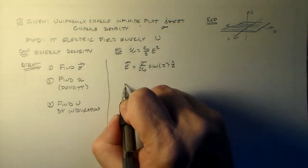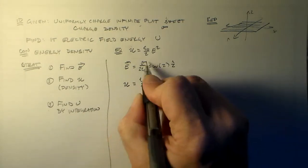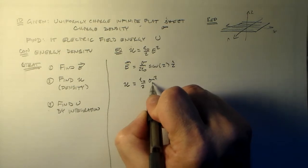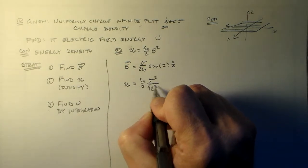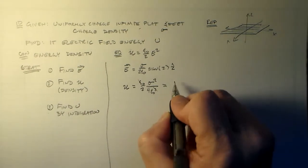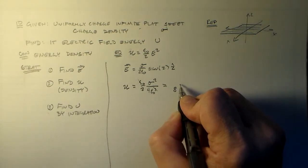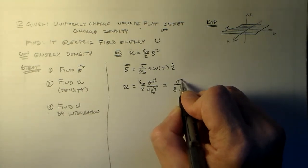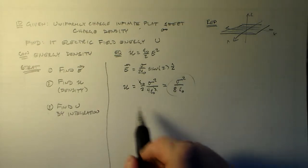And then for u, u is just going to be epsilon naught over 2 times the square of this, which is sigma squared over 4 epsilon squared. And cancel that. So we have 8 epsilon. Here we have sigma squared. And that's our energy density.